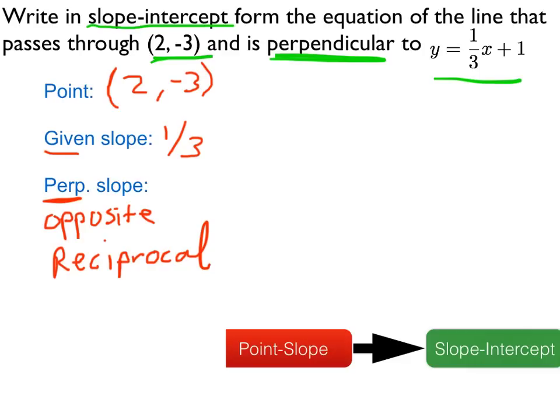And so what that means is, since 1 third is positive, the perpendicular slope will be negative. And 1 third, flip that over, becomes positive 3. So our perpendicular slope is negative 3.